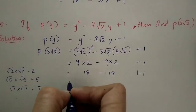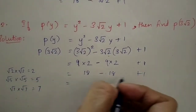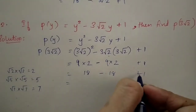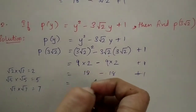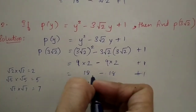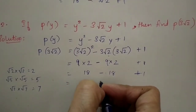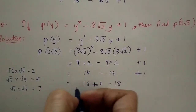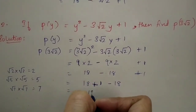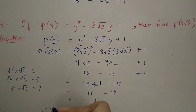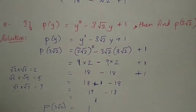We now have 18 minus 18 plus 1. Applying BODMAS rule, we perform addition first: we write 18 plus 1 together, which gives 19, and then subtract 18. So 19 minus 18 equals 1. Therefore, p(3√2) equals 1.